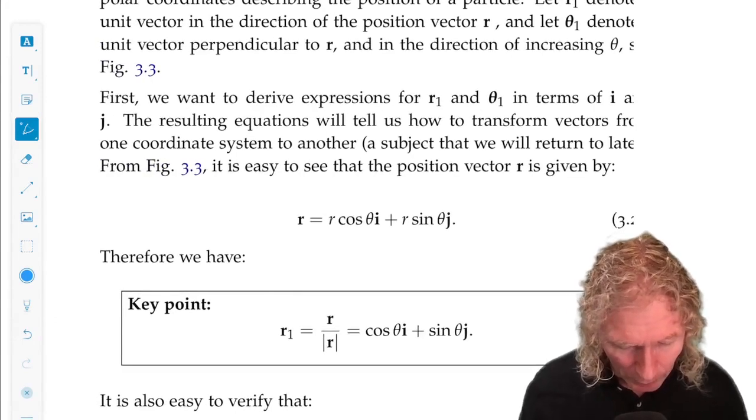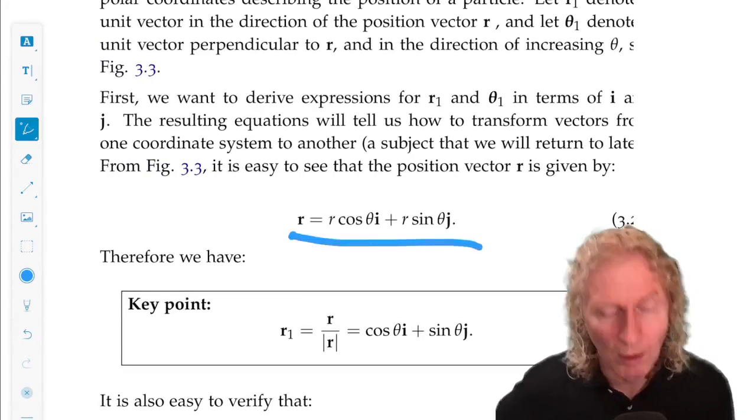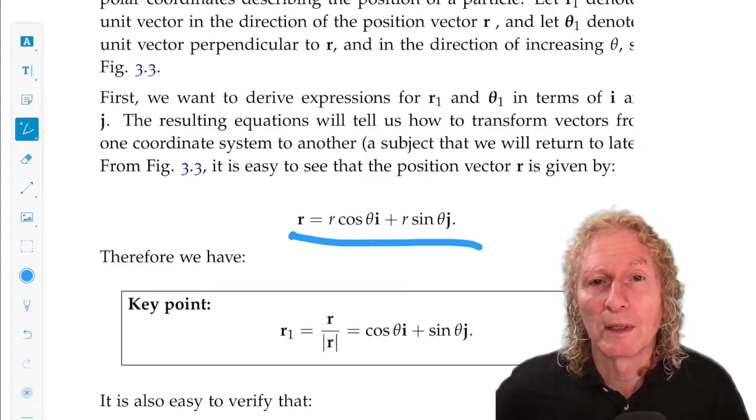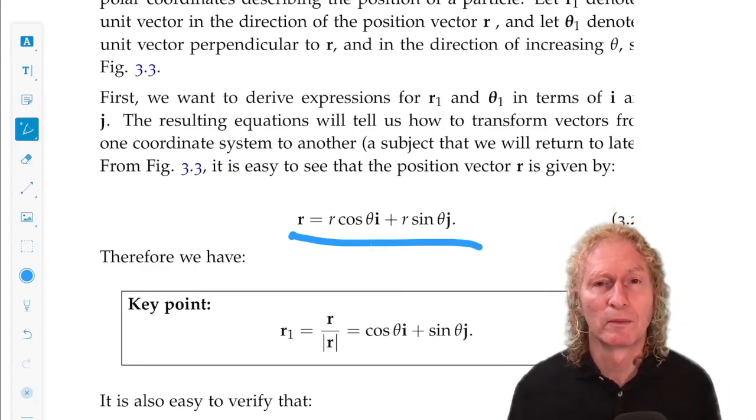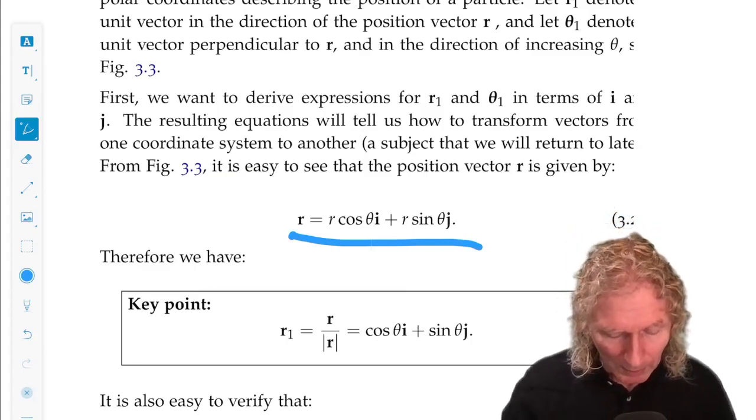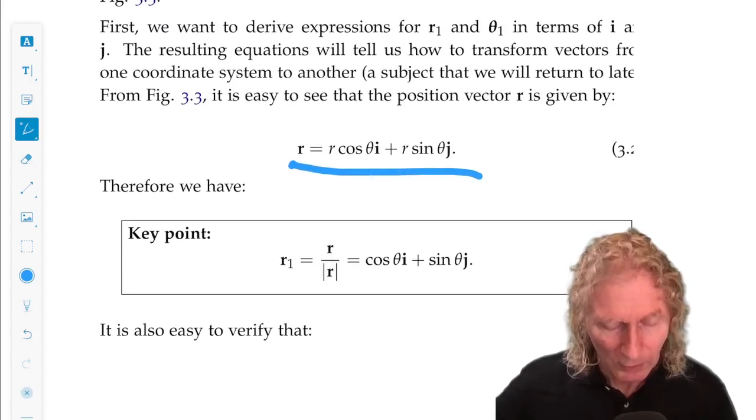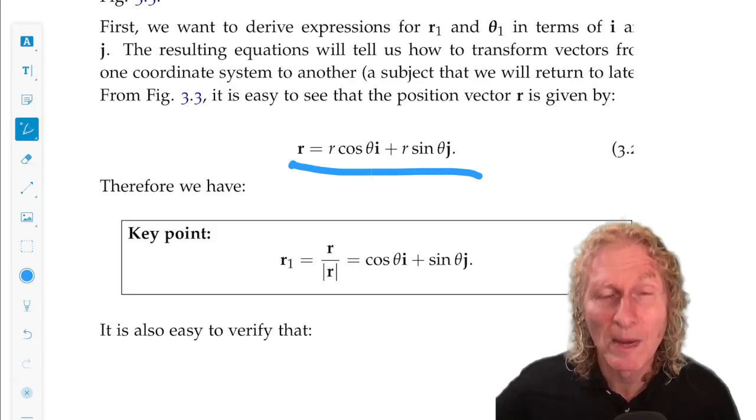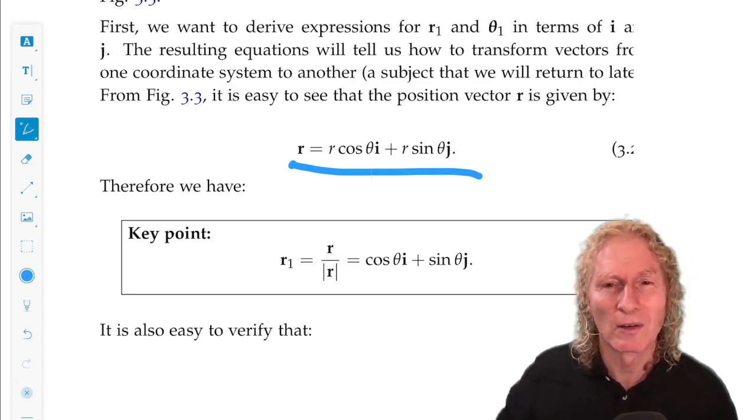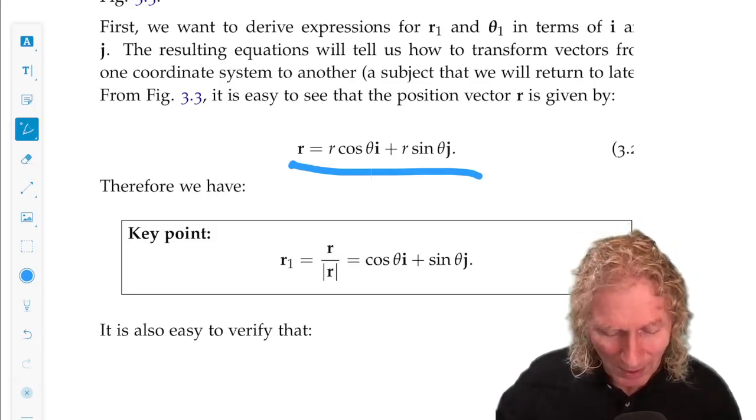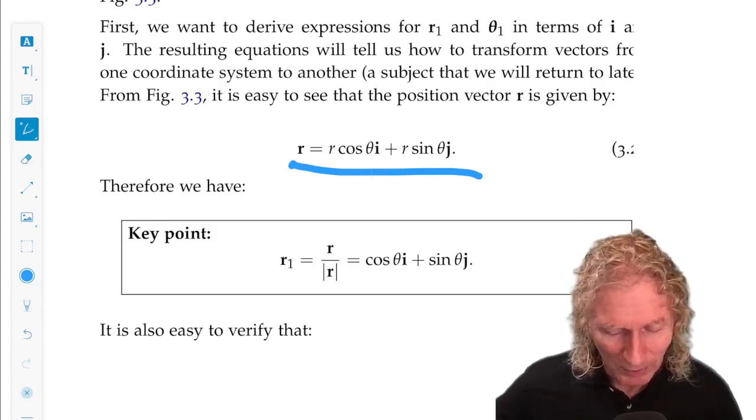With a little geometry, you can see that r is r cosine theta i plus r sine theta j. It's very simple. A natural unit vector - sorry I said that too fast - r is magnitude r, which is r that is not bolded here, r cosine theta i plus r sine theta j.